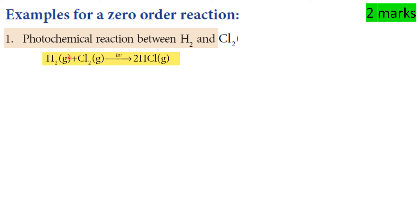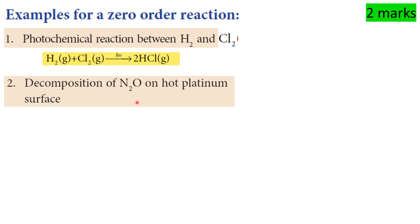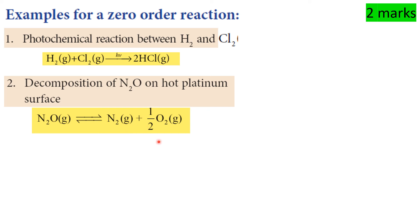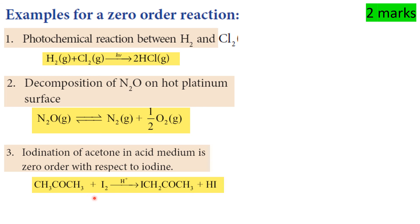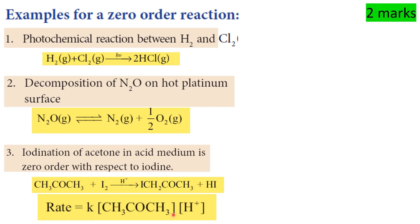Examples of zero order reactions: photochemical reaction between hydrogen and chlorine — H2 plus Cl2 gives 2HCl; decomposition of N2O on a hot platinum surface. Also, iodination of acetone in acid medium is zero order with respect to iodine: acetone plus I2 plus H+ gives CH2COCH3 plus HI. Rate equals k[acetone][H+] — iodine is zero order.